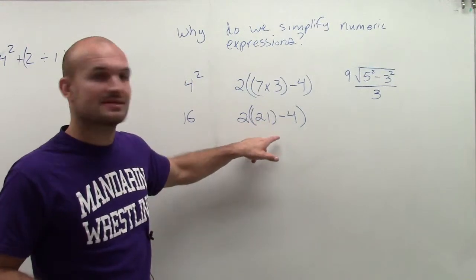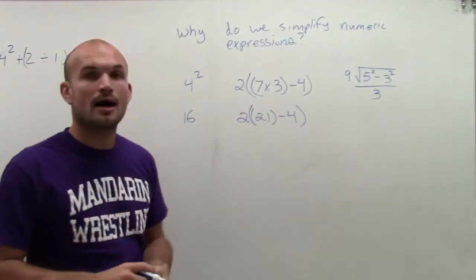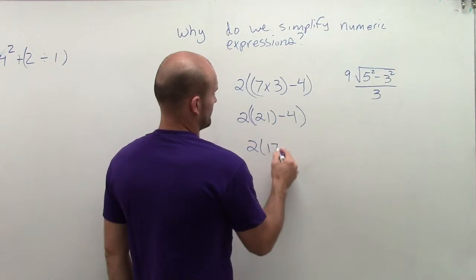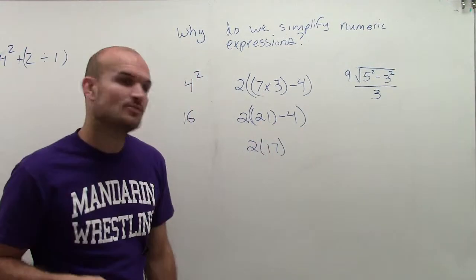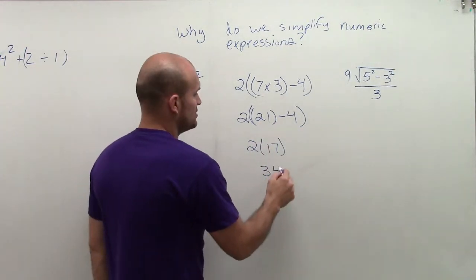Now, I can drop the parenthesis and just do 21 minus 4, which is 17, and then now I can multiply 2 times 17, which equals 34.